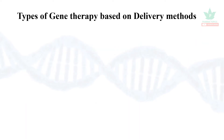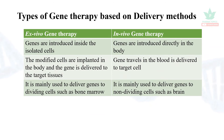Let us see the types of gene therapy based on delivery methods — how the gene is delivered. There are two methods: one is ex vivo gene therapy and the other is in vivo gene therapy. In the ex vivo method, the genes are introduced into isolated cells, the genetic makeup is modified, and then they are infused into the target tissues.